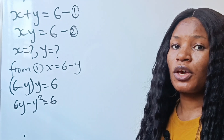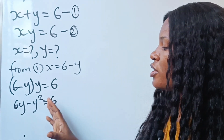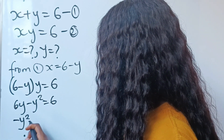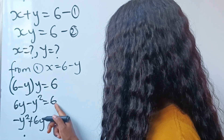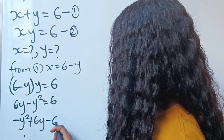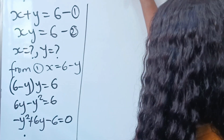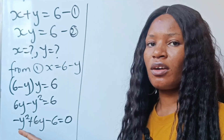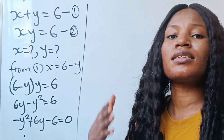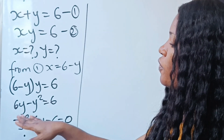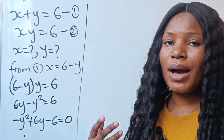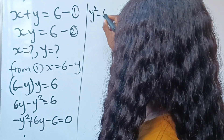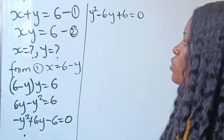This is a quadratic equation, so let's arrange it well. We are going to have minus y squared plus 6y, then transposing the 6 to this side gives minus 6, equal to 0. We don't want the negative leading term, so let's multiply through by minus 1. We get y squared minus 6y plus 6 is equal to 0.